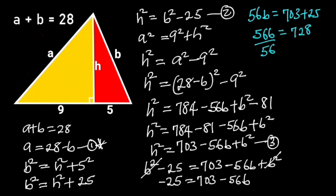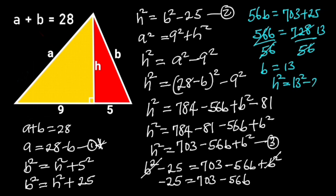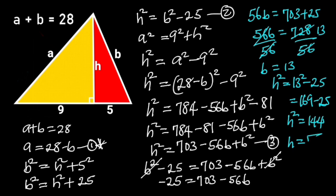Next, we divide both sides by 56. 56 will cancel out, and 728 divided by 56 is 13. So B is equal to 13. To find H, let's substitute B with 13 in equation 2. It follows that H squared is equal to 13 squared minus 25. 13 squared is 169, and 169 minus 25 is equal to 144. So H squared is equal to 144. Taking the square root of both sides will give us H is equal to 12.